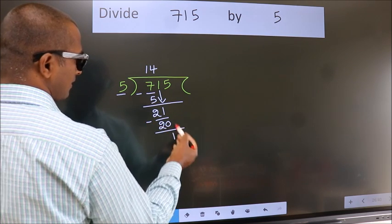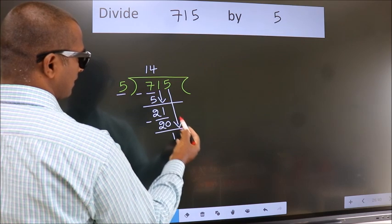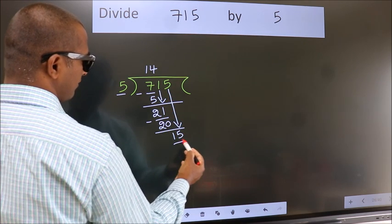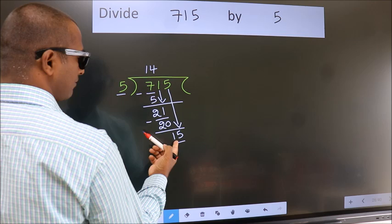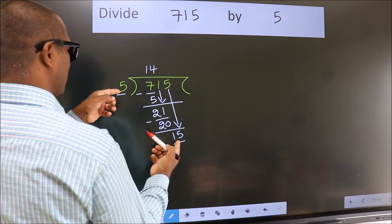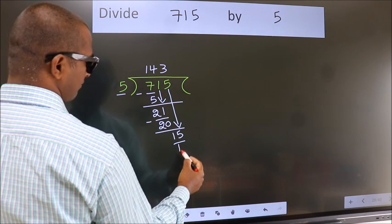After this, bring down the beside number. So, 5 down. So, 15. When do we get 15? In 5 table. 5 threes, 15.